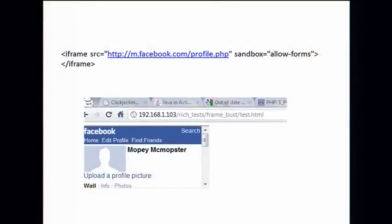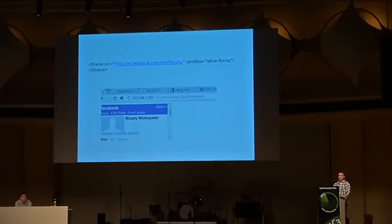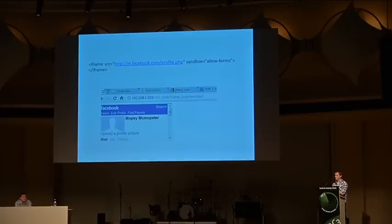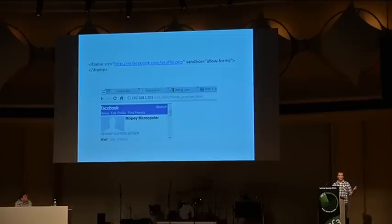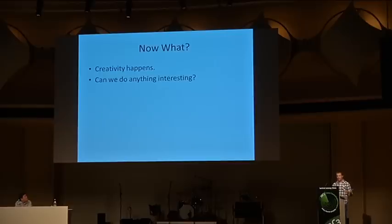Facebook used JavaScript to prevent framing of their most sensitive pages — not just the like button, but pages like privacy settings and account settings that they definitely did not want you to frame. They had a six-line snippet of JavaScript as a frame-busting script. But it turns out that if you just added a sandbox attribute to disable the JavaScript, you could happily frame the page. So this picture is me framing Facebook. But now what — what can we actually accomplish by framing a page?